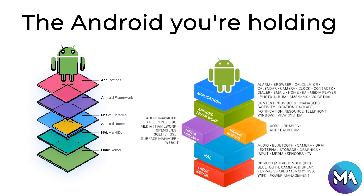Let's see what each layer contains. At the top, Applications include things like the alarm, browser, calculator, dialer, email, home screen, SMS, and photo album — these are the apps you see on the front of your phone. Underneath is the Android Framework, which includes content providers, activity manager, location manager, package manager, window manager, view system, and resources. Below that are Native Libraries such as audio manager, SQLite, surface manager, and WebKit, as well as Android Runtime including core libraries, Dalvik VM, and ART.